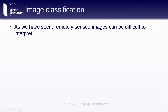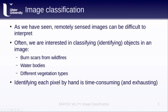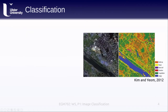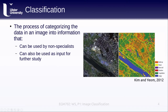As we have seen, remotely sensed images can be difficult to interpret. They're usually taken from angles that we don't normally see, and they often have scales that we aren't familiar with. Our goal with remote sensing is to derive information from the raw image data. We want to classify or identify the objects in an image — we might be interested in identifying burn scars from wildfires, mapping water bodies, or mapping different vegetation types. Identifying each and every pixel by hand is an extremely time-consuming and physically exhausting task, so we normally want to avoid this. The process of categorizing raw image data into information that can be used by non-specialists, or as input for further study, is what we refer to as classification.